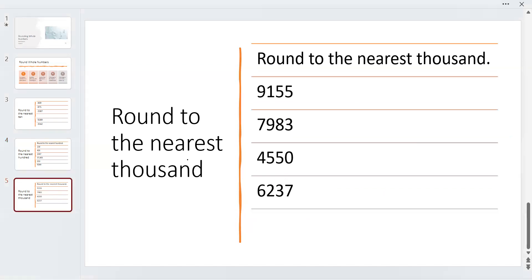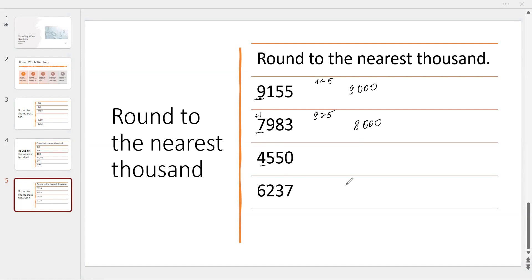Next slide: round to the nearest 1,000. According to the place value chart, our number has 9,000 in the 1,000s place. The next digit is 1, which is less than 5, so we write 9,000. In our next number, we have 7,000 and the next digit is 9. Since 9 is greater than 5, we add 1 and write 8,000. Next: 4,000 and the next digit is 5 — since 5 or more means round up, we add 1 and get 5,000.